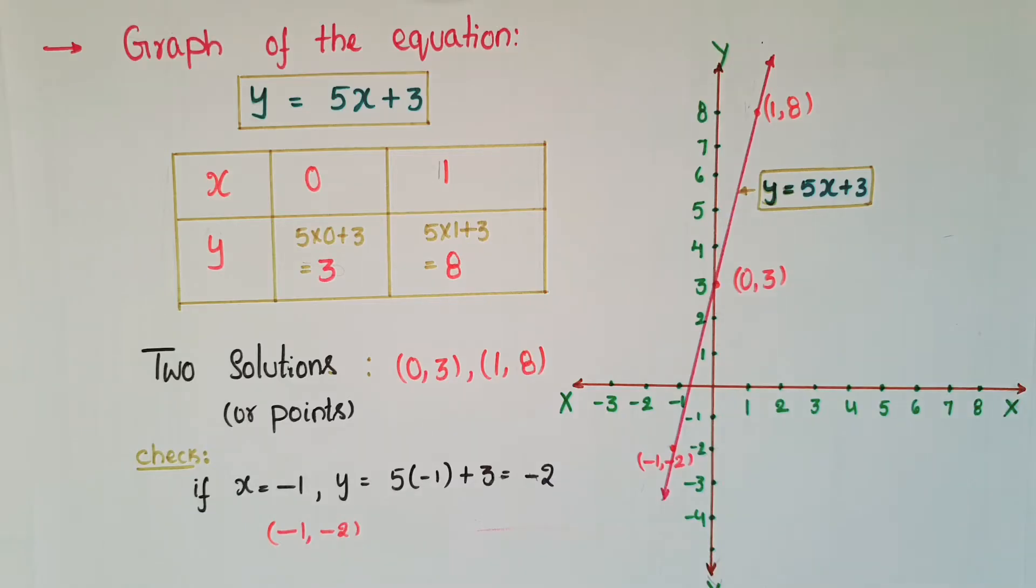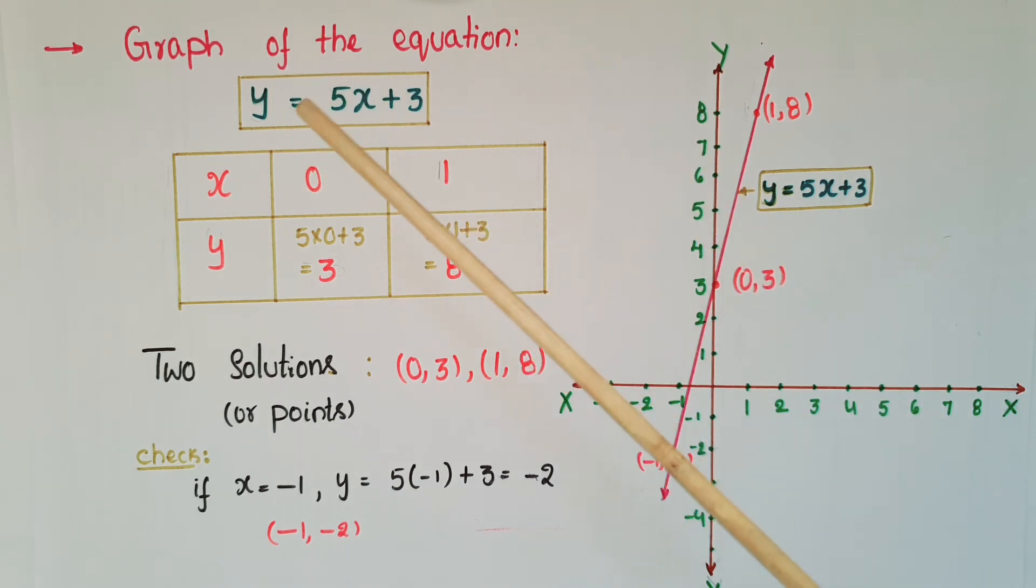Now I am going to tell how to draw this linear equation on the graph. We know that to draw a linear equation on the graph we need two solutions or two coordinates. So first find two solutions here.